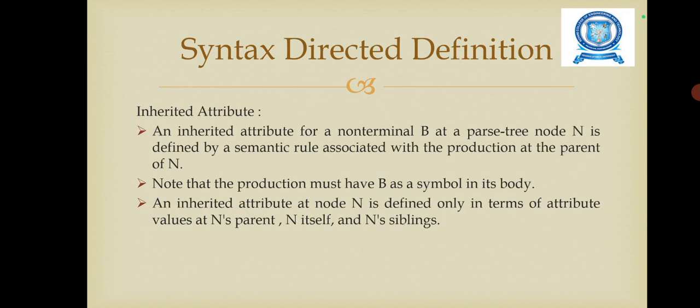An inherited attribute for a non-terminal B at a parse tree node N is defined by a semantic rule associated with the production at the parent of N. The production must have B as a symbol in its body. An inherited attribute at node N is defined only in terms of attribute values at N's parent, N itself, and N's siblings.